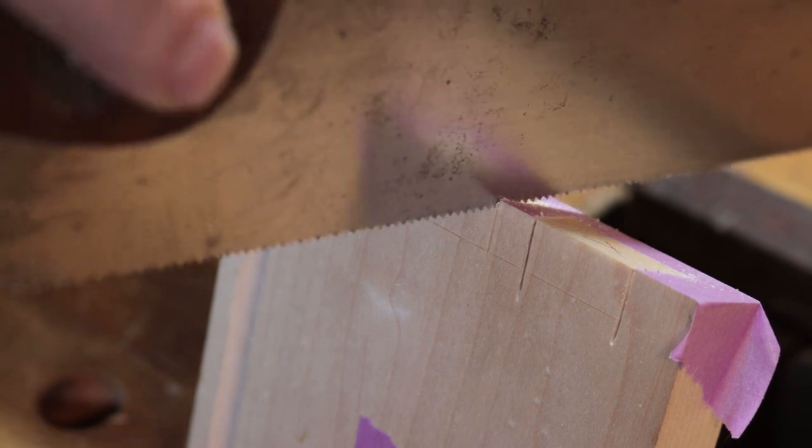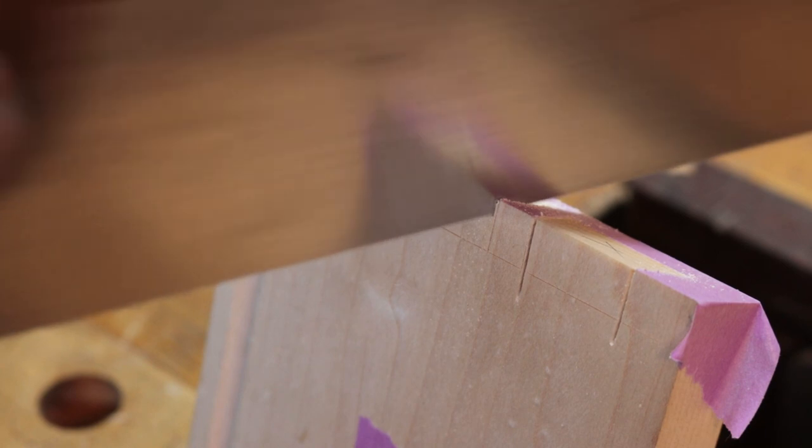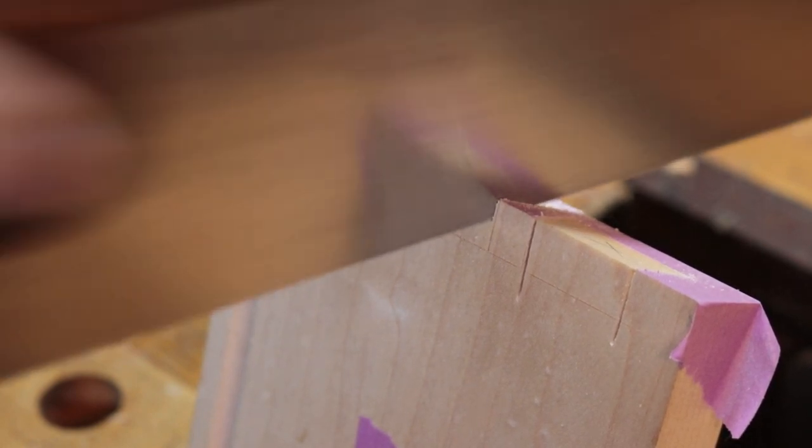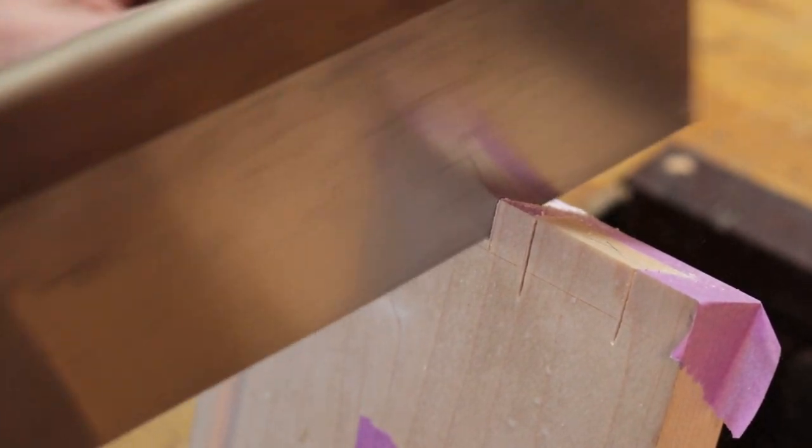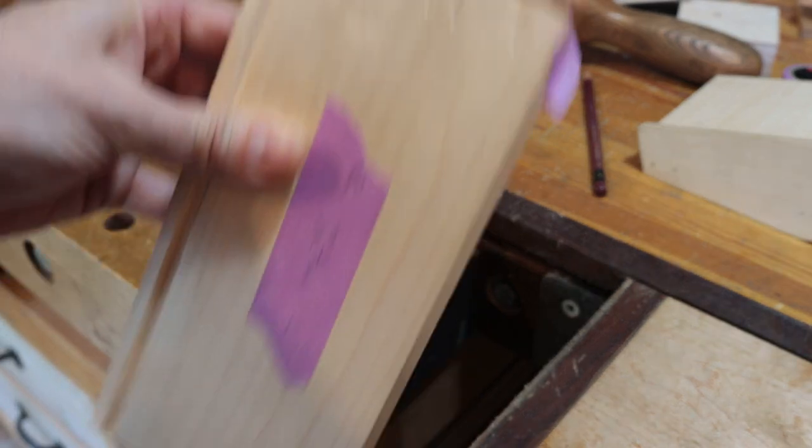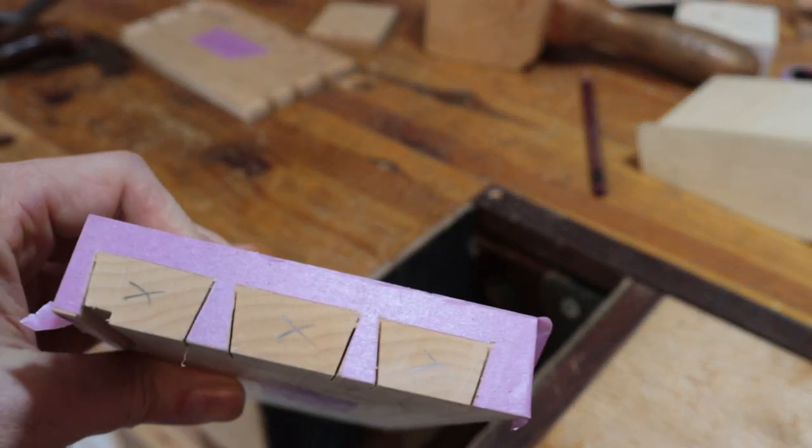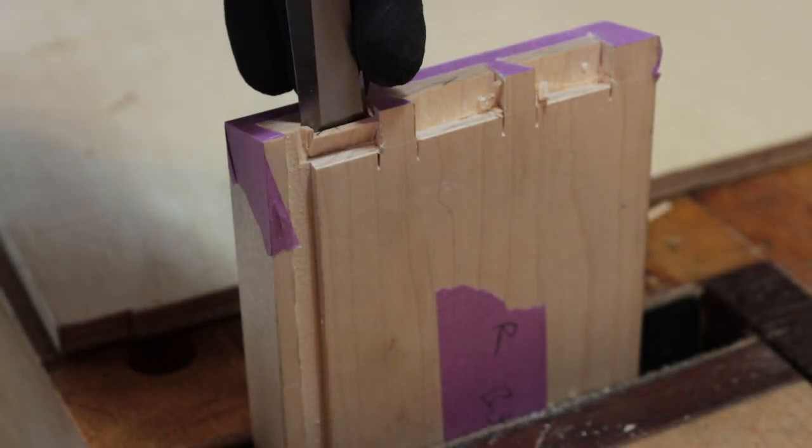A couple things I wanted to point out is when I cut down the pins on these half blinds I go way past the thickness line for the sides of the drawers and this is a very old technique and it allows you to cut out most of the waste which makes chiseling it out later a lot easier and it's also a sign of a hand cut drawer because you can look into the drawer after it's done you can see those saw marks.